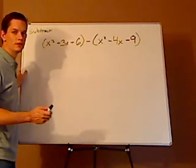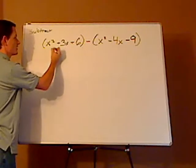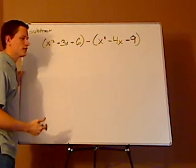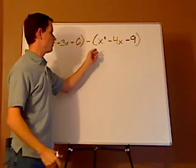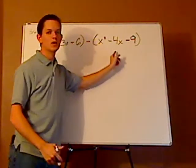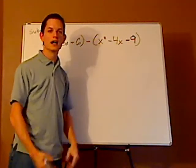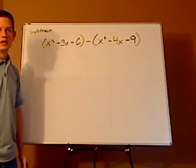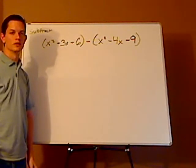So, let me read it to you, and then you can try it on your own. You have (x² + 3x + 6) minus (x² - 4x - 9). Pause the video and see if you can try to do this one on your own.